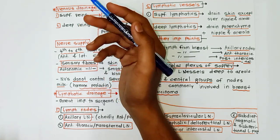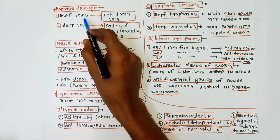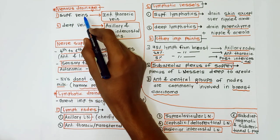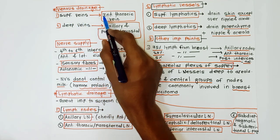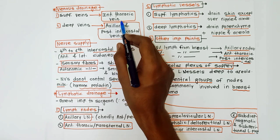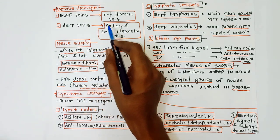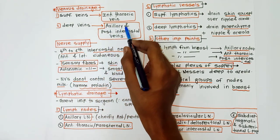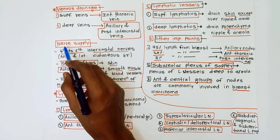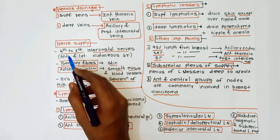For venous drainage of the breast, there are two points: superficial veins, which drain into the internal thoracic vein, and deep veins, which drain into the axillary and posterior intercostal veins.